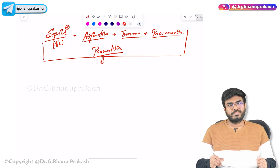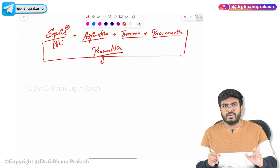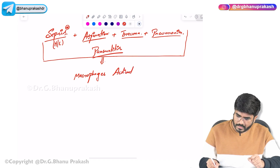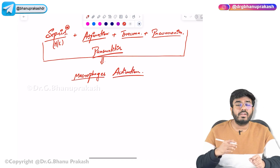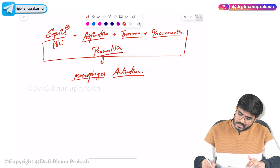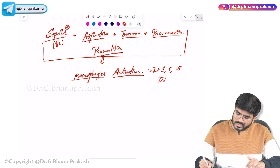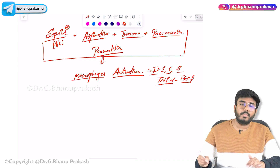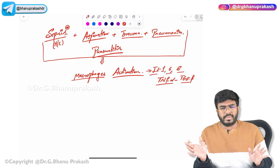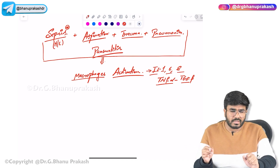Whenever there is aspiration, trauma, or infection, these triggers are going to first activate the macrophages. The macrophages present in the alveoli get activated, and they start to produce cytokines like interleukin-1, 6, 8, tumor necrosis factor alpha, and transforming growth factor beta. These are the major cytokines produced by activated macrophages.